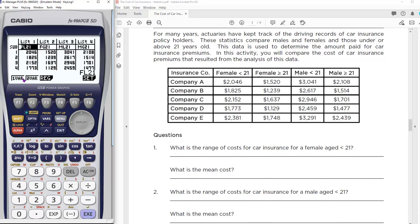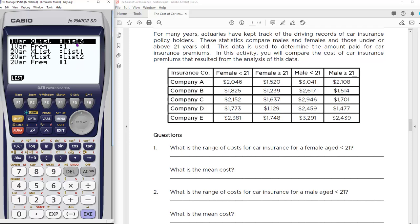How would I do two variables? I want to compare under-21 females to over-21 females. Let's go to set again and into two-variable. Right now it's pulling from list one for X and list two for Y. That's good. List one is under 21, list two is over 21. That works.